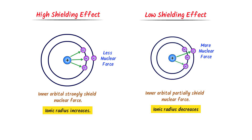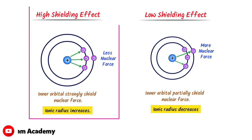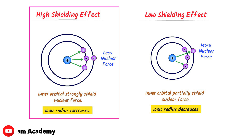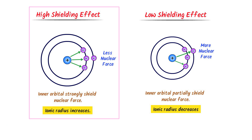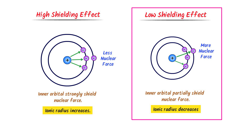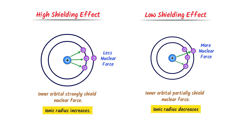Just note that the higher the shielding effect, the larger is the atomic size or ionic radii. While the less the shielding effect, the smaller is the atomic size or ionic radii.